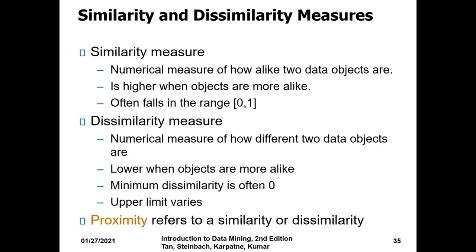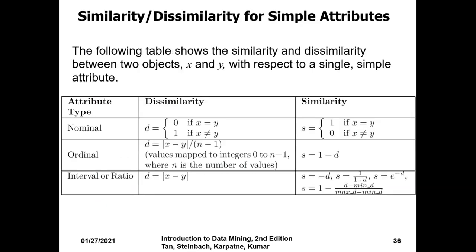Usually for nominal data values, if x equals y, both are equal. For example, if the color is red and red, it means d equals 0. If the color is red and blue, d equals 1. Similarly, similarity would be vice versa. For ordinal values when there is a grade or something, we divide by n minus 1.